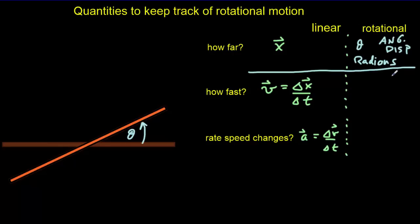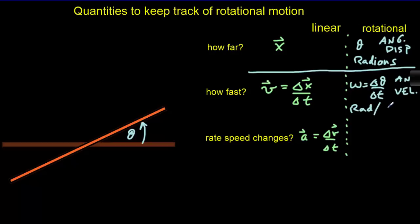Secondly, we'd like to know how fast our object is rotating. We keep track of that using a quantity omega, which is called the angular velocity. It's really the same omega we used in simple harmonic motion where we called it the angular frequency — it's one and the same. It's going to be equal to the rate of change of angular displacement, and its units are going to be radians per second.